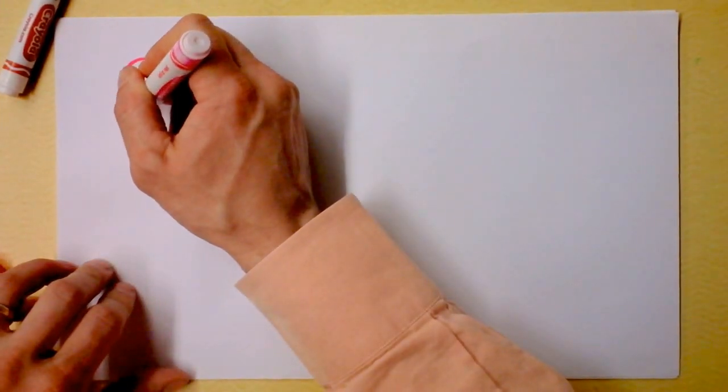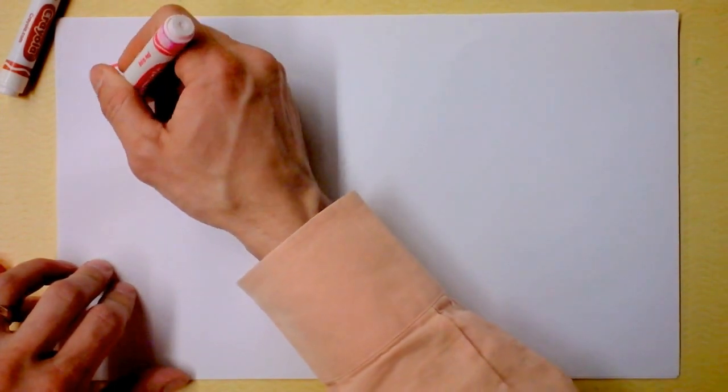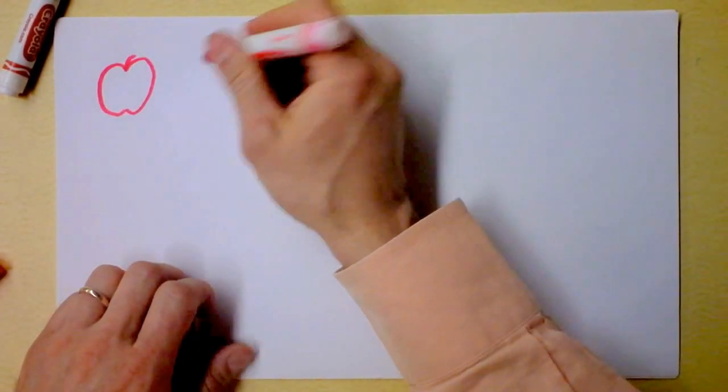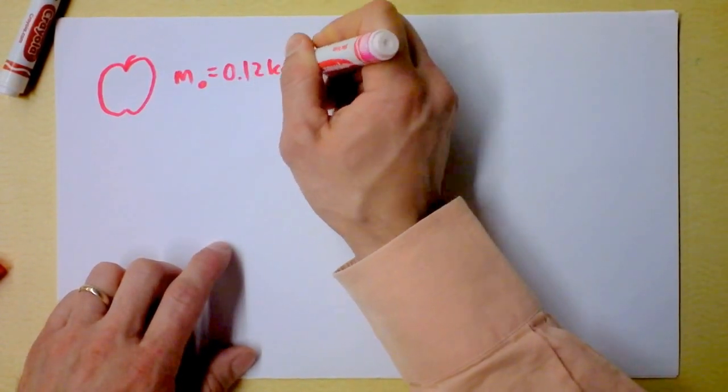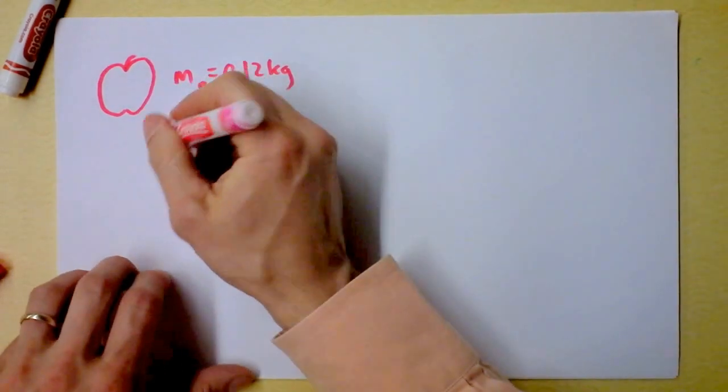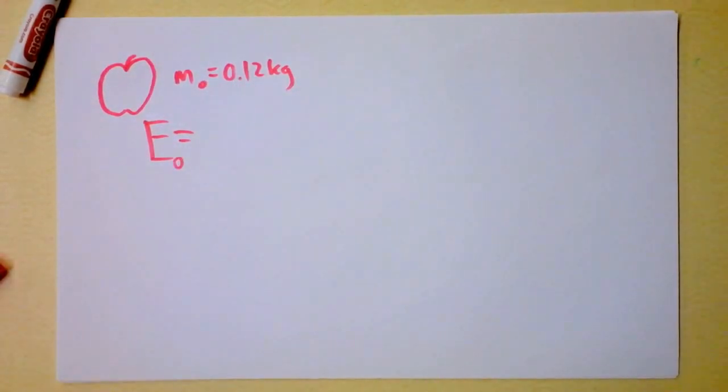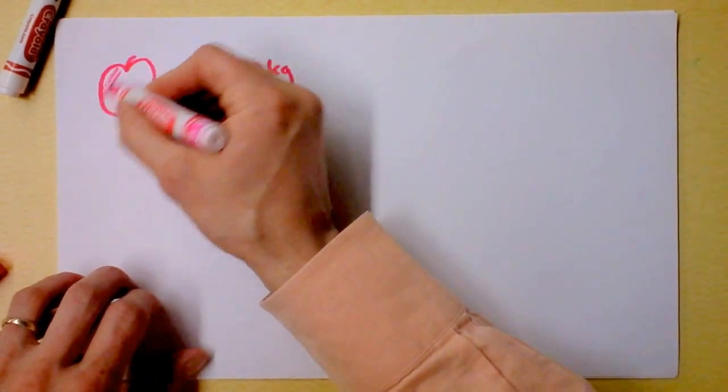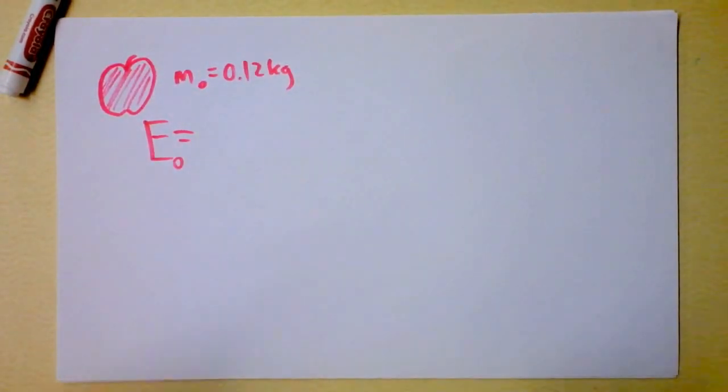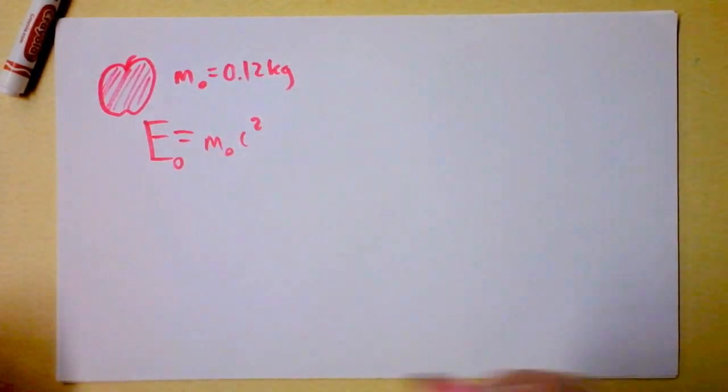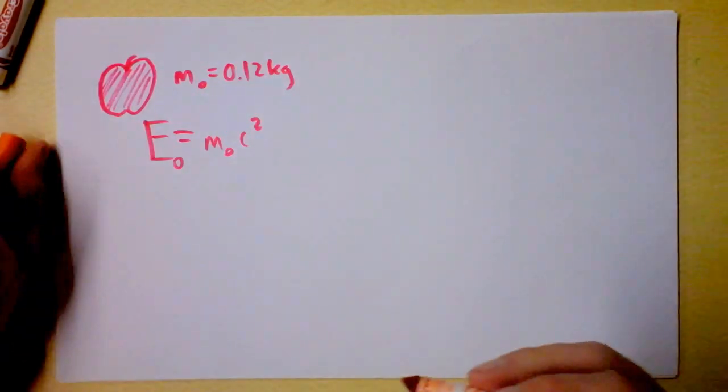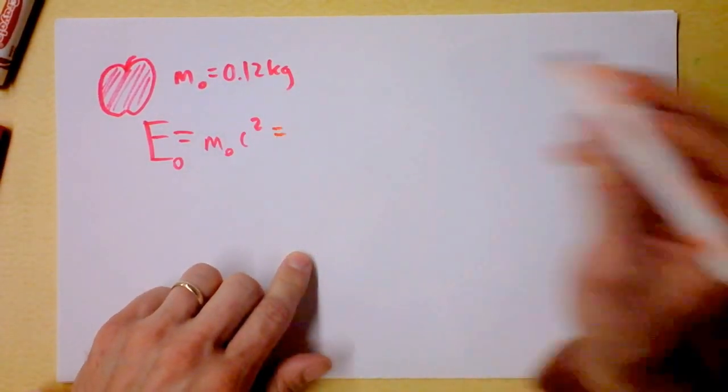The energy contained in a standard apple - I'm a red delicious kind of guy. If you have an apple with rest mass 0.12 kilograms, I want to figure out how much energy we're talking about. The rest energy of this apple is the mass times c-squared. C is the speed of light, 3×10⁸, and I'm going to square it.